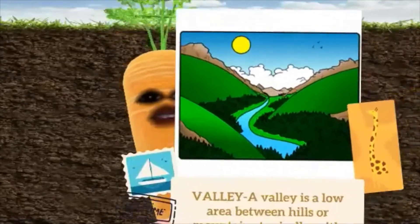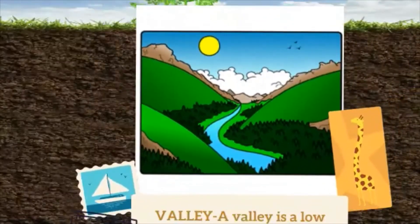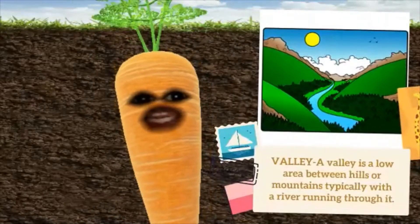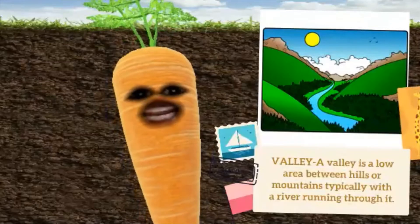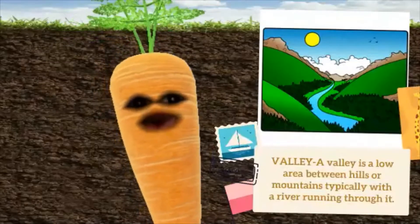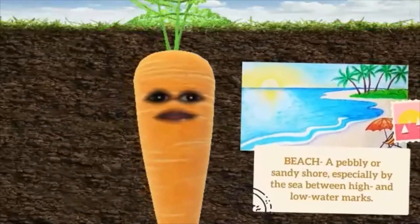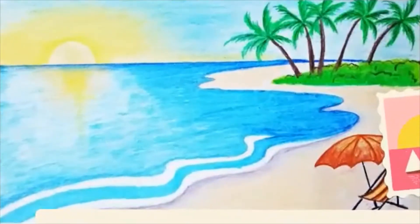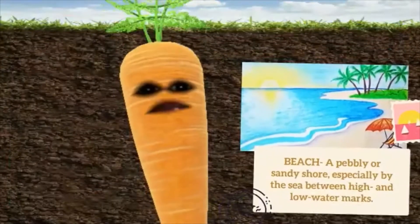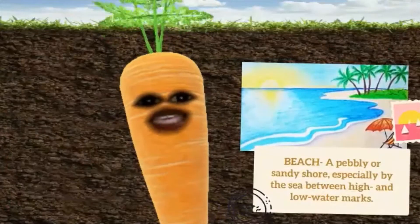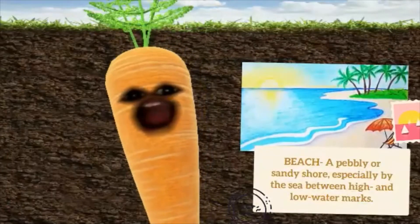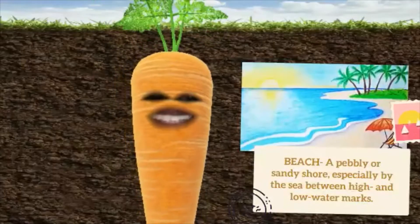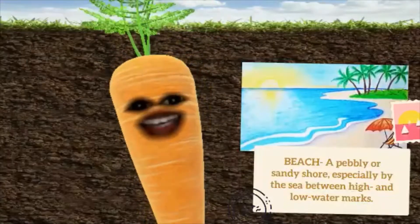Number 7 is a valley. A valley is a low area between hills or mountains, typically with a river running through it. And the last one is the beach. A beach is a sandy or pebbly shore, especially by the sea between high and low water marks. These are the surfaces of the Earth.